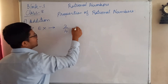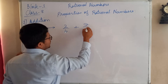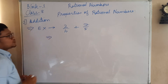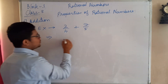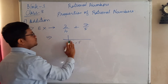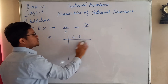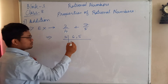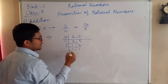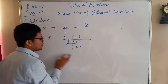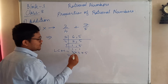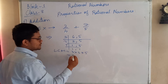How would you add a rational number like this? So for this, what you have to do is find the LCM of 6 and 5 first. You have to always use prime numbers. This is how we find the LCM — 3 × 2 × 5, so 2 × 5 is 10, and 10 × 3 is 30. So our LCM is 30.